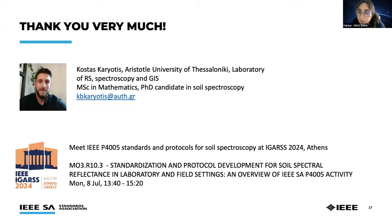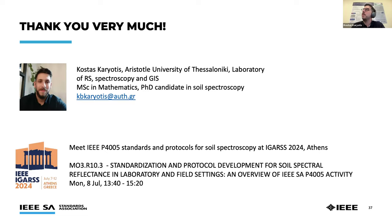Another question: what soil parameters can be estimated by spectroscopy? The most widely used parameter is organic carbon, but you can also estimate clay, mineralogical composition, and total nitrogen — which, if I'm correct, also has the highest accuracy when modeled on LUCAS spectra. Additionally, pH, calcium carbonates, electrical conductivity — these are widely tested — and also moisture. It is a very wide set of soil parameters.